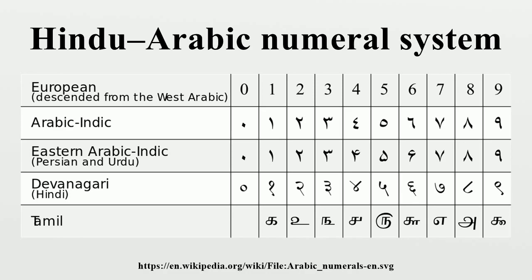Despite the numeral system being described as the Hindu-Arabic numeral system, it had been developed by Hindu mathematicians and was in extensive use throughout India before being adopted by Persian mathematicians and passed on to the Arabs further West. The numeral system was transmitted to Europe in the Middle Ages by Fibonacci. The use of Arabic numerals spread around the world through European trade books, and today they are the most common symbolic representation of numbers in the world.